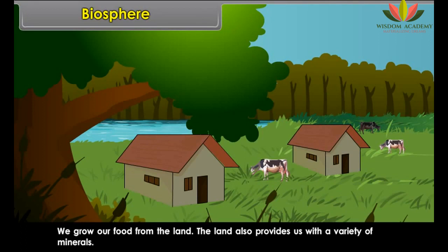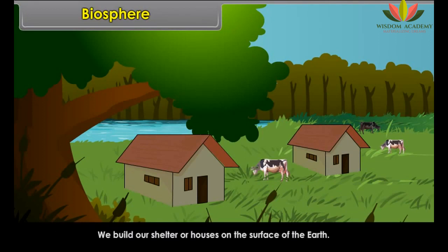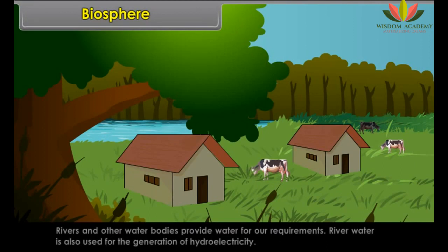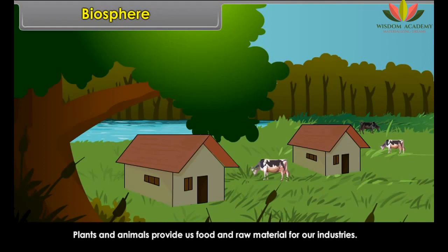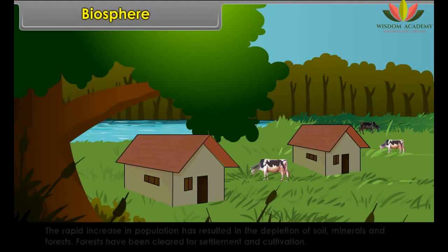There are several species of organisms in the biosphere. The organisms found in the biosphere are broadly divided into plant kingdom and animal kingdom. The four realms of the earth interact with each other and affect one another in some way or the other.